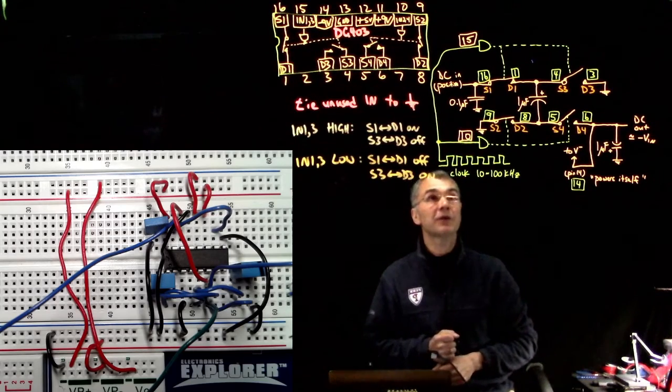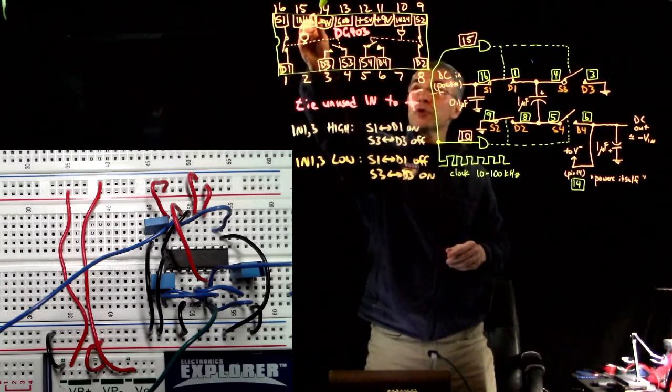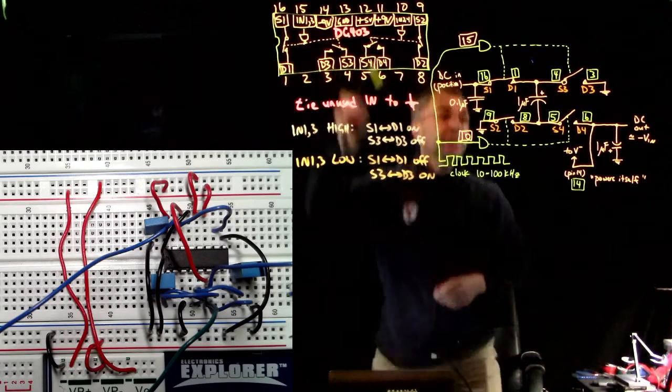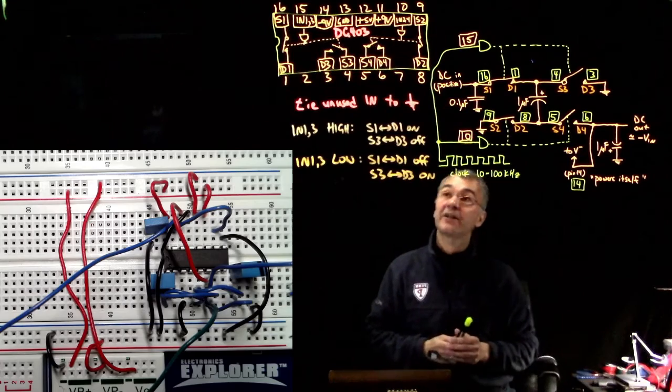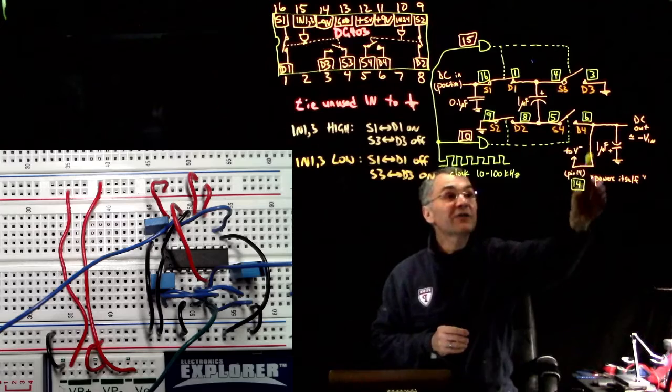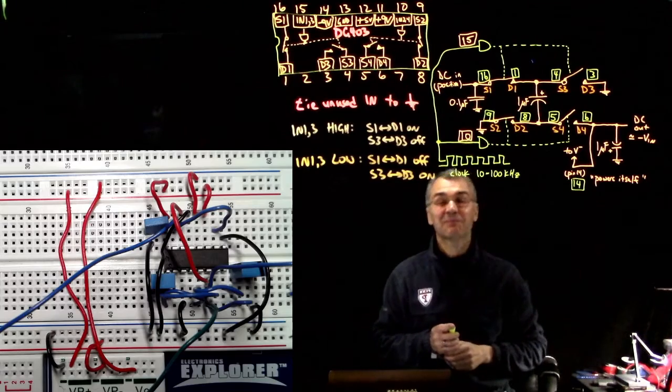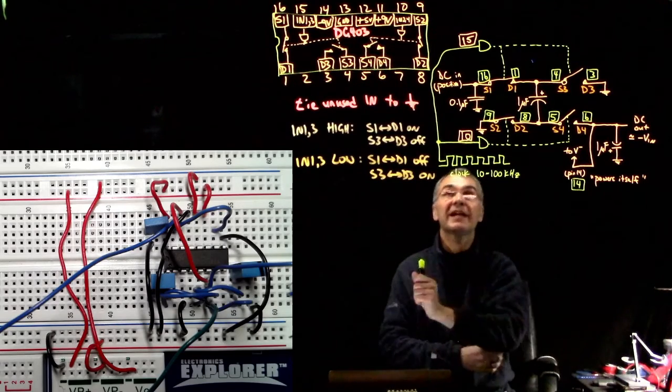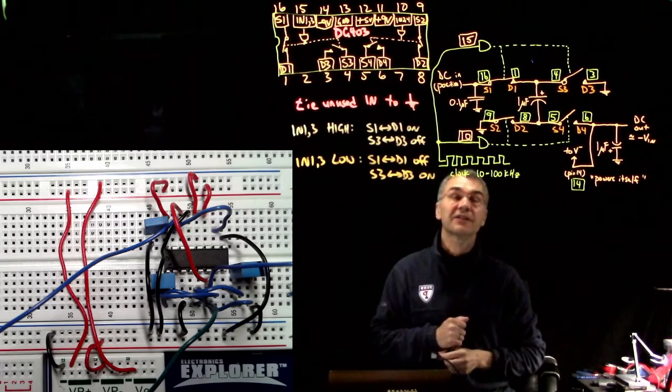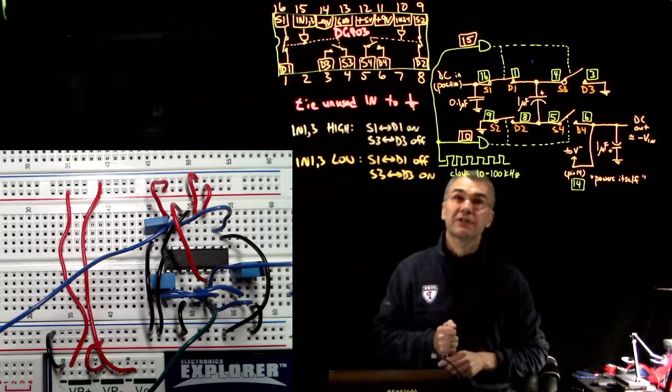In this case, we are not using any negative power supply. Pin 14 that normally connects to minus 9 volts is not connected to minus 9 volts. The negative power that goes into pin 14 actually comes back from itself, so it's providing its own negative voltage. There is no external voltage in this circuit that is smaller than zero.